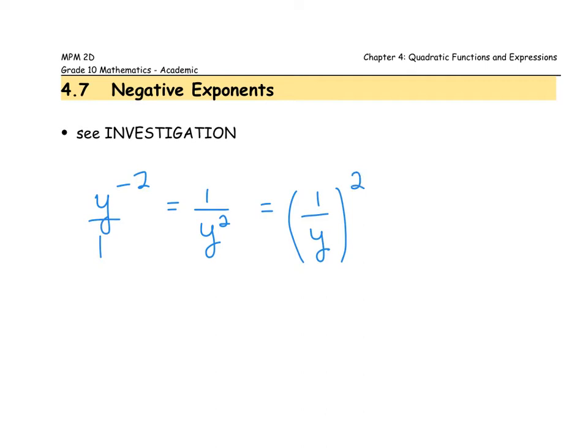The reason this didn't show up clearly in yesterday's lesson is because we did square the one, but when you square one you end up with one. So let's extend that reasoning to our fraction example.